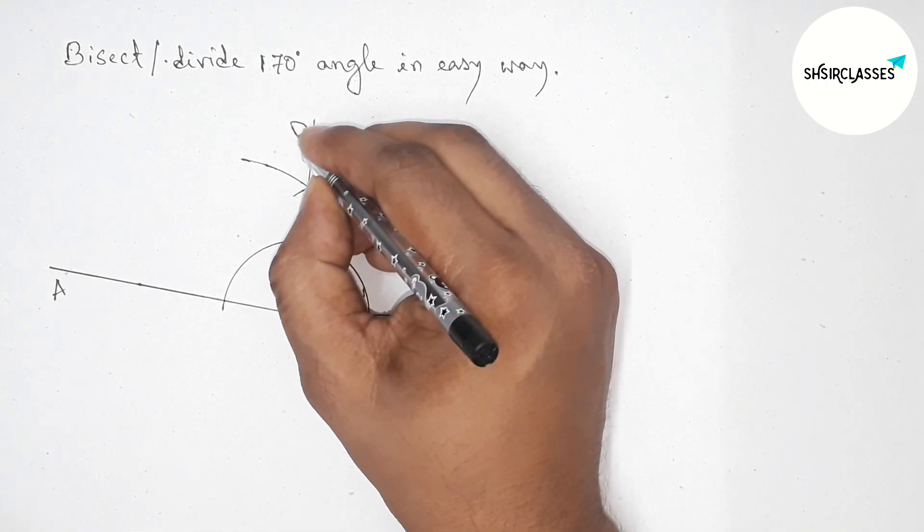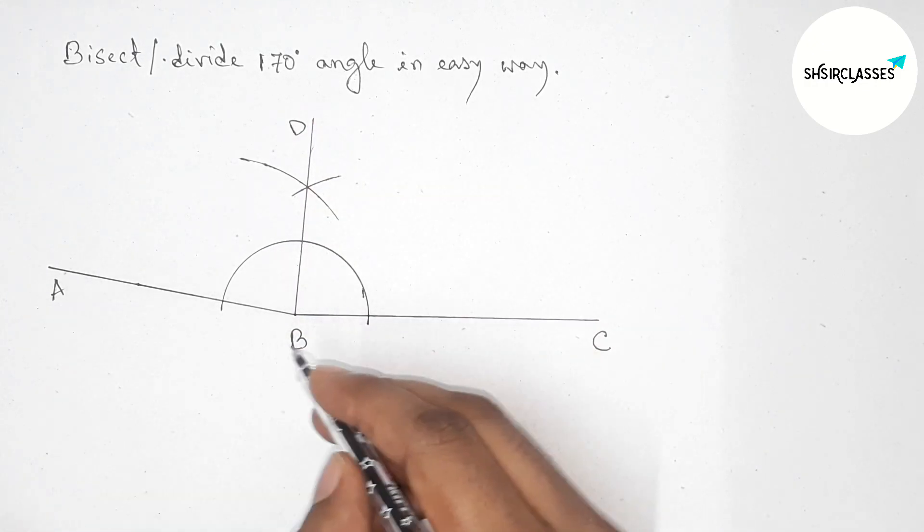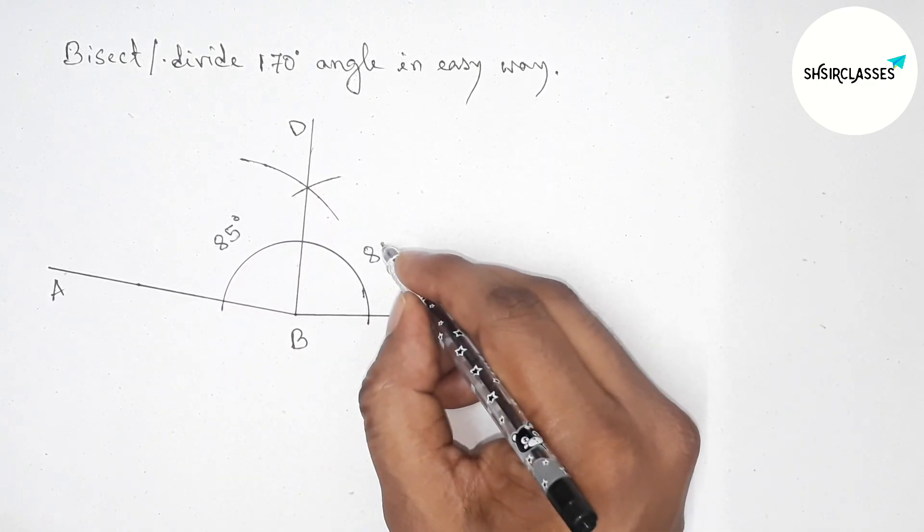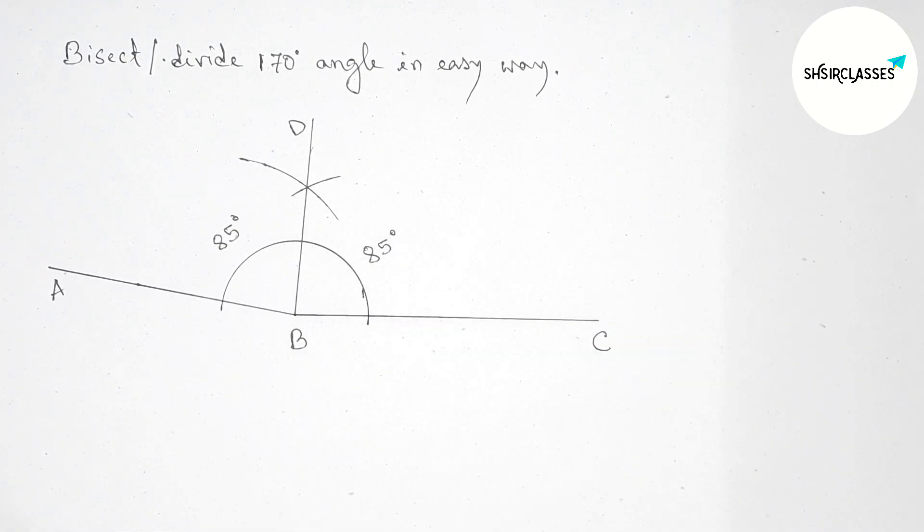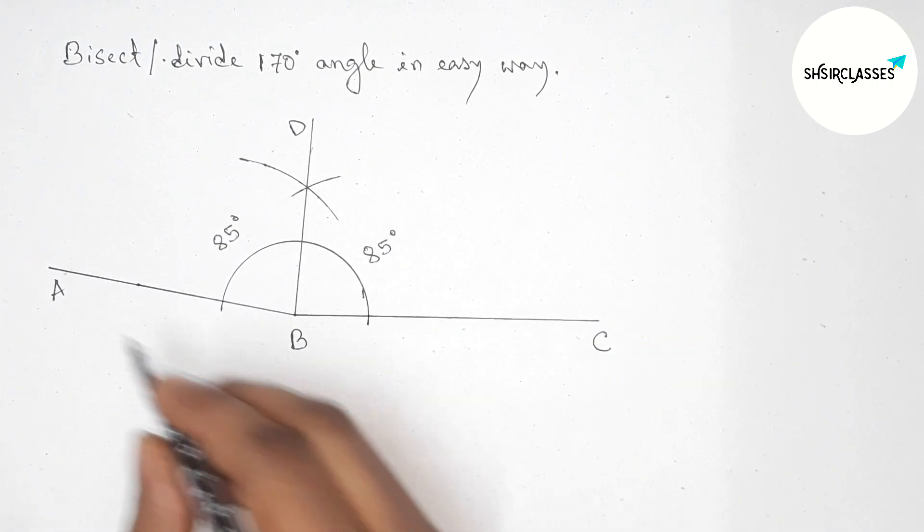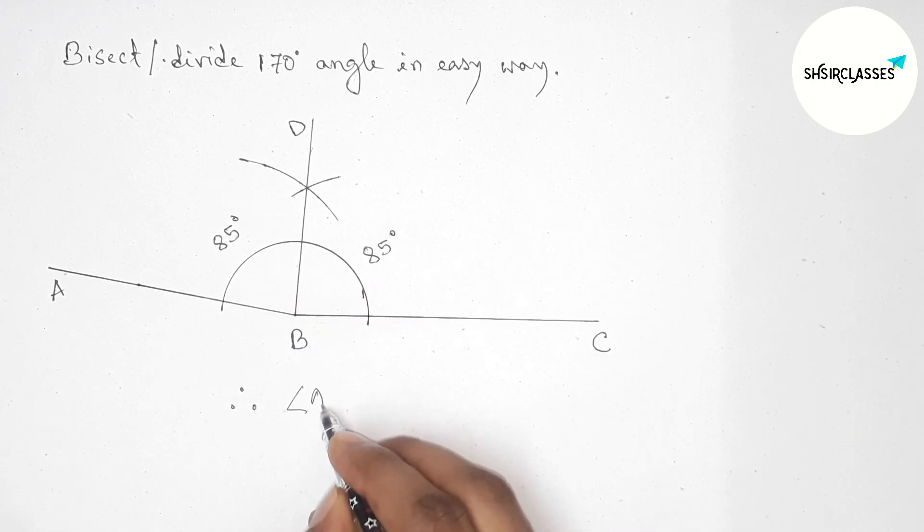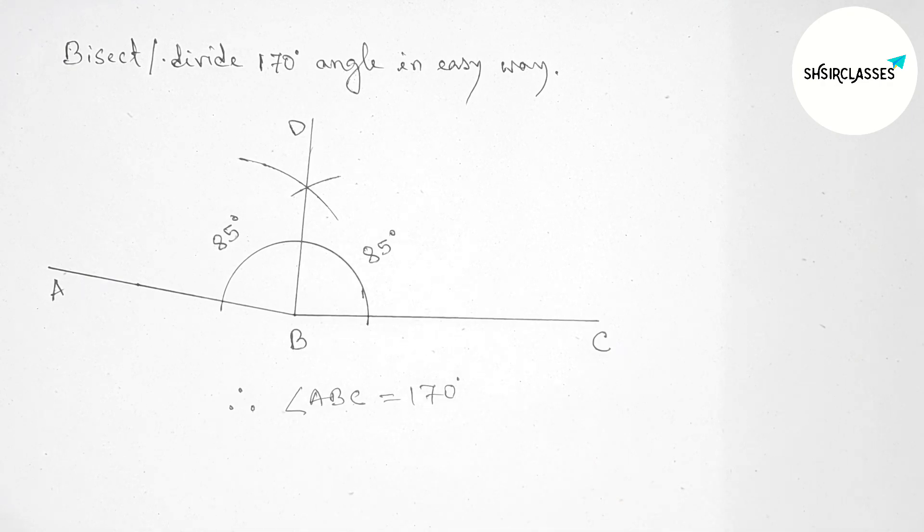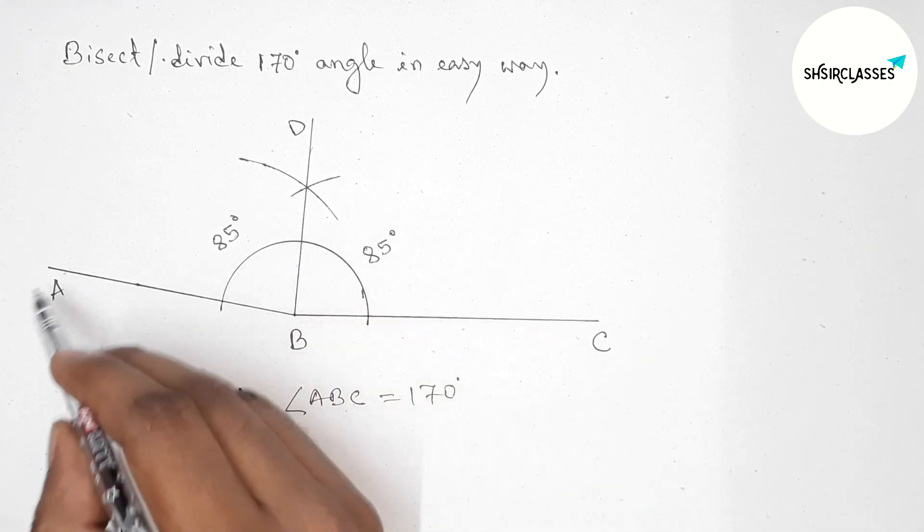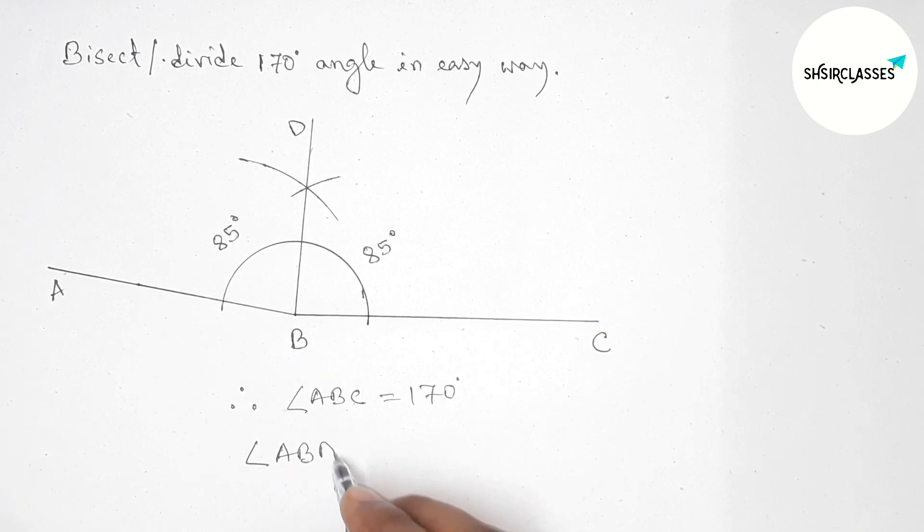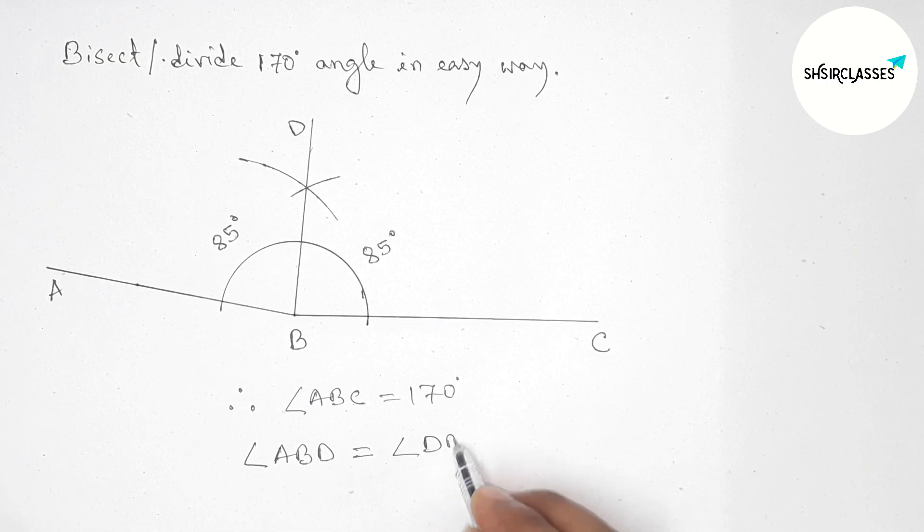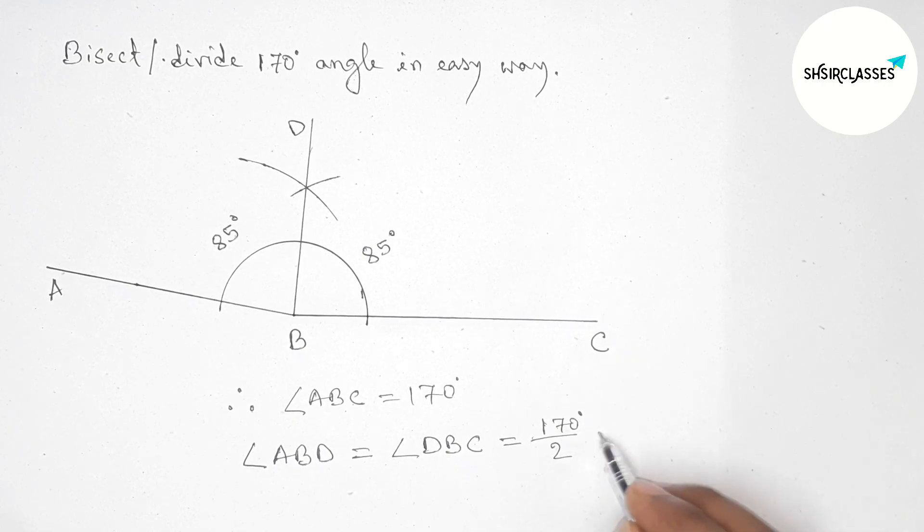Now taking here point D. So here angle ABD is 85 degrees and angle DBC is also 85 degrees. Therefore, angle ABD equals angle DBC, both are equal, so 170 divided by 2.